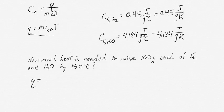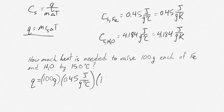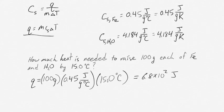We can use the Q equals MC delta T expression. For iron, the amount of heat needed to raise 100 grams by 15 degrees Celsius is 0.45 joules per gram degree Celsius times 15 degrees Celsius. The delta T is 15, and we work out that the amount of heat needed is 6.8 times 10 to the 2 joules, or 0.68 kilojoules.